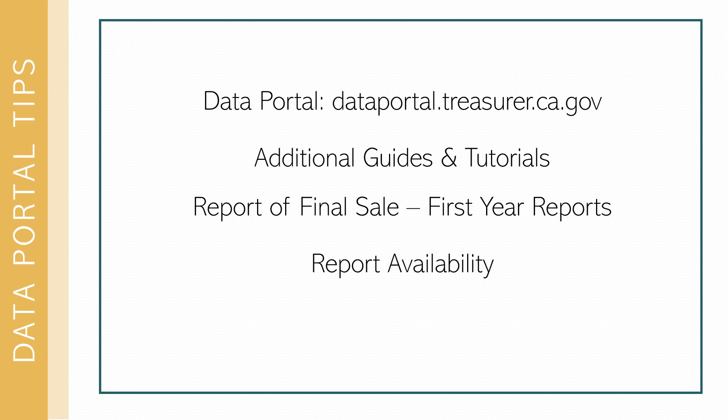The Data Portal web address is dataportal.treasurer.ca.gov, and there are links to the Data Portal from CDIAC's homepage as well as our Reporting Debt Issuance webpage. Additional guides and tutorials are posted on our Reporting Debt Issuance webpage. If you are new to using the Data Portal, I recommend reviewing the guides and watching the annual debt transparency report tutorial. Each ongoing annual report is based on the data submitted in the report of final sale. Make sure the data contained in the report of final sale is accurate and complete before you file any of your ongoing annual reports. If you notice any errors, you can edit the report of final sale before starting an ongoing annual report.